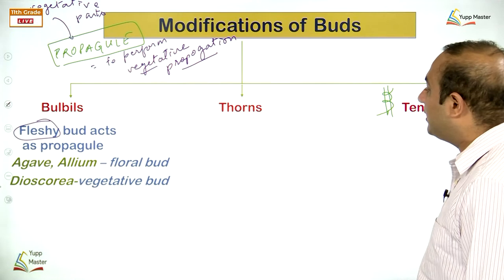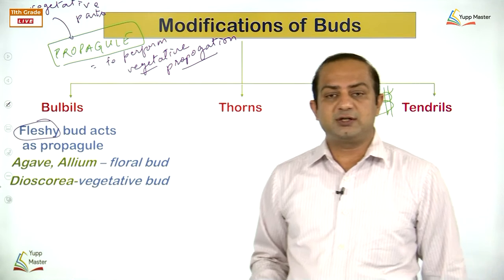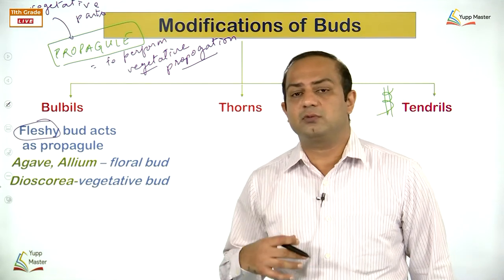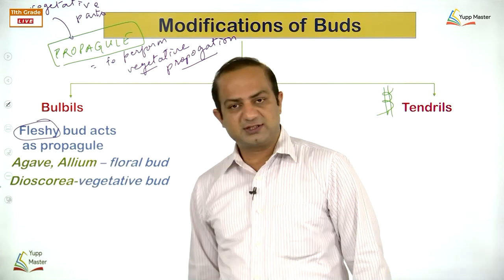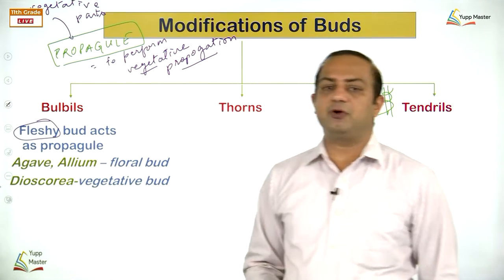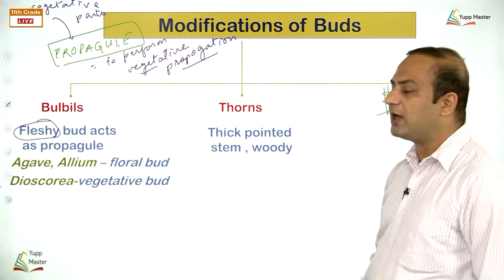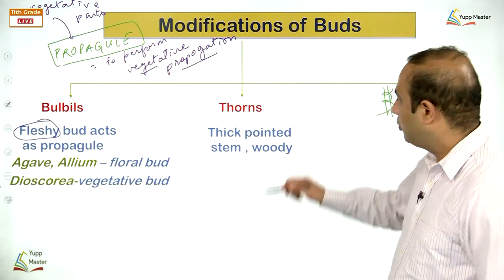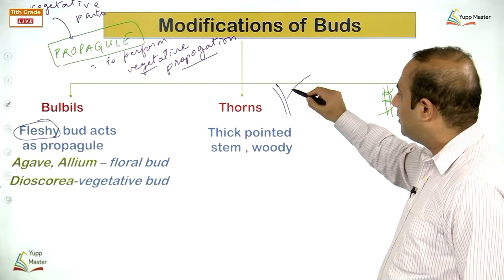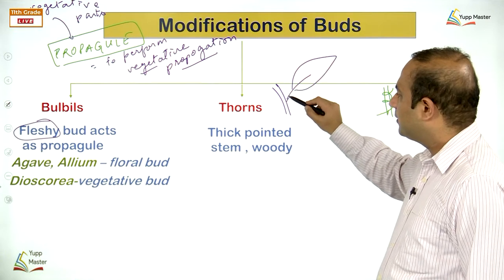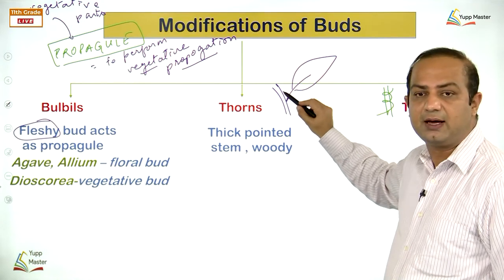The third type of stem is deliquescent, seen in mango and banyan tree. Here the height reaches a certain level and after that only branches grow, making the structure dome-shaped. In deliquescent, the lateral buds are active while the apical bud becomes inactive. The three types of trees are: Caudex, Excurrent, and Deliquescent.